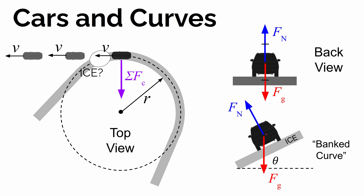It all has to do with the direction of the normal force. The normal force is always perpendicular to the surface that's doing the pushing. So in this case, the ice surface would be pushing up perpendicular to whatever the angle of the banked curve is, and gravity pulls straight down.